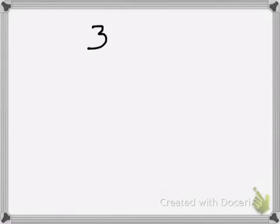Here is another example for partial quotients. It's got a little bit of a bigger dividend, so I want to show you what you can do when you might not necessarily know right off the top of your head what the biggest multiples are that you can take out of your dividend. So for example, we're going to do 492 divided by 3.